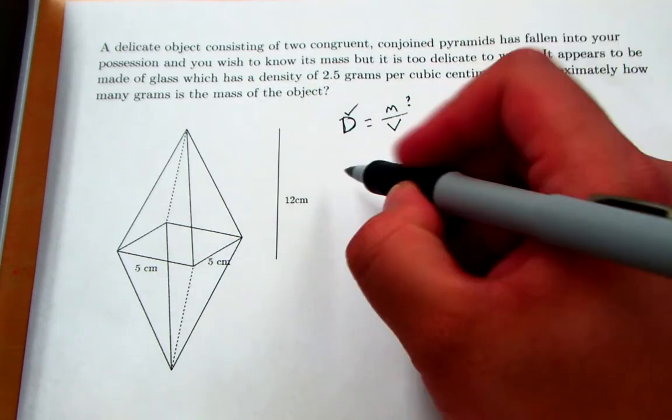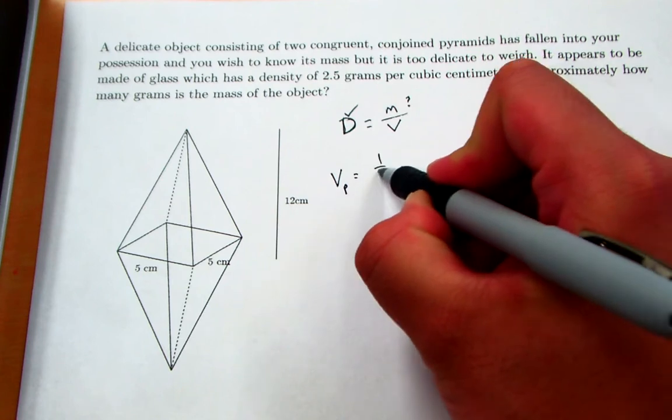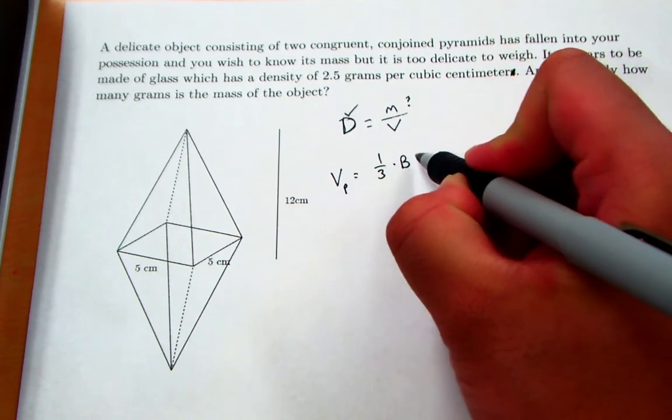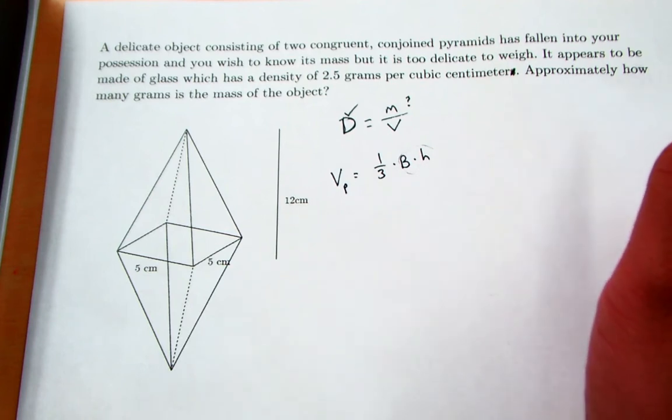So the volume for a pyramid is given by the formula one-third times the base area times the height. Now this part right here will give you the volume of a prism.